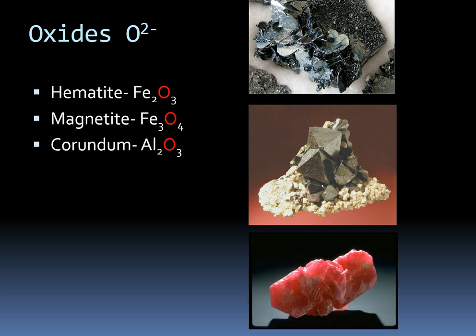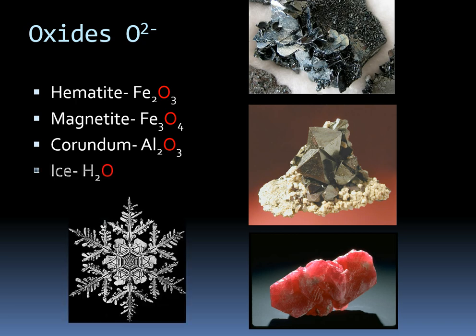We also have corundum. When it's red, we call it a ruby; when it's blue, we call it a sapphire. They're both aluminum oxides — the difference between them is trace elements that get stuck in the chemical structure and change the colors. And believe it or not, ice is an oxide because it fits the chemical pattern. In fact, a snowflake meets all five criteria to be a mineral, so we'll revisit ice as a mineral, a sedimentary rock, an igneous rock, and a metamorphic rock in glaciers throughout the semester.